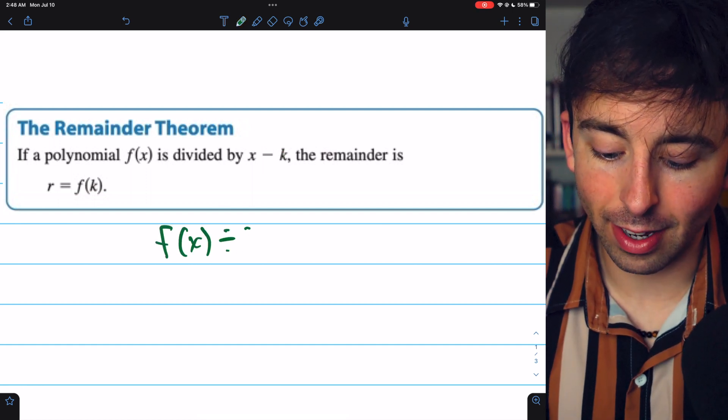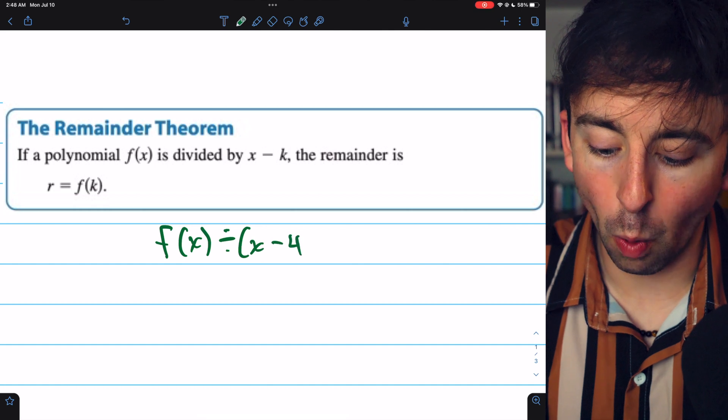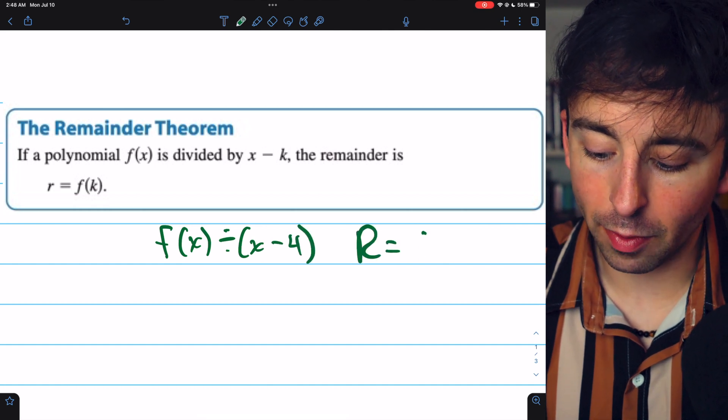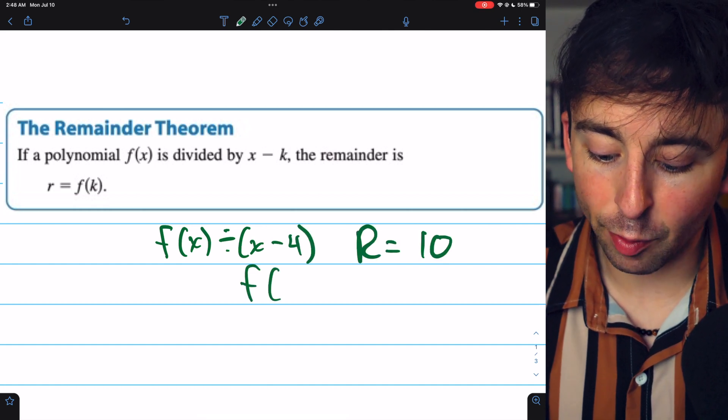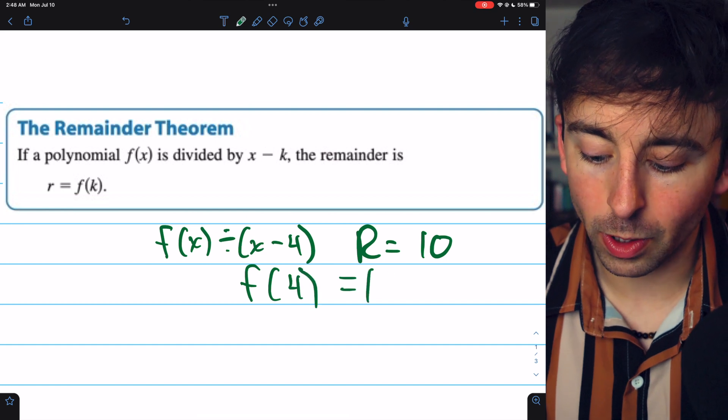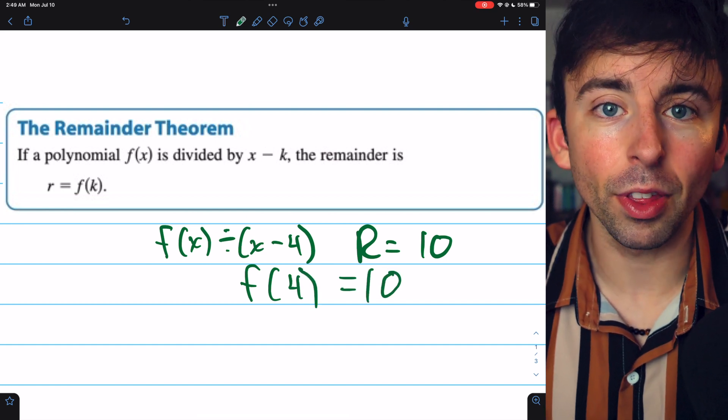If we divide a function f(x) by, say, x minus 4, and we get a remainder of 10, that means f(4) is equal to 10. It's a pretty useful theorem.